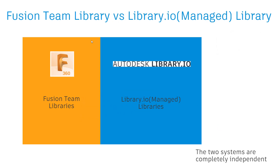It's very important to understand that library.io and Fusion 360 use completely different infrastructures. The libraries are stored in different places and they have different permission systems, so it's very important to understand that they are completely separate. Now, if you hear the terms "library.io library" and "managed library," these are interchangeable. Managed libraries live on library.io, so both terms refer to the same thing.